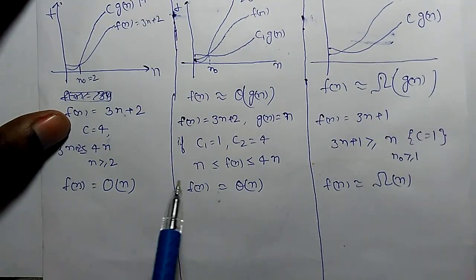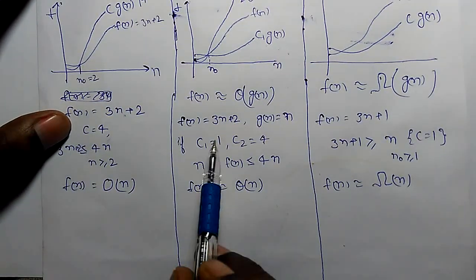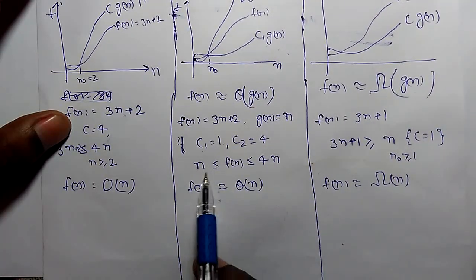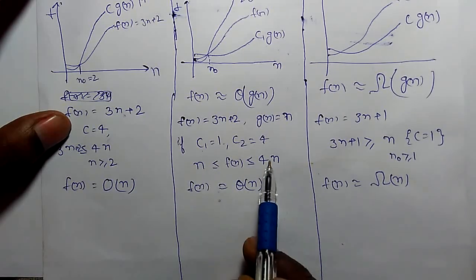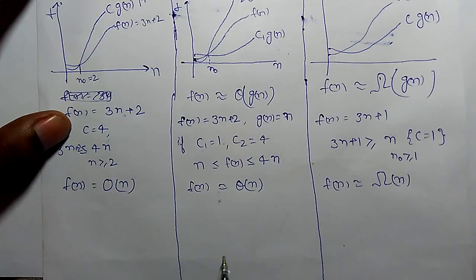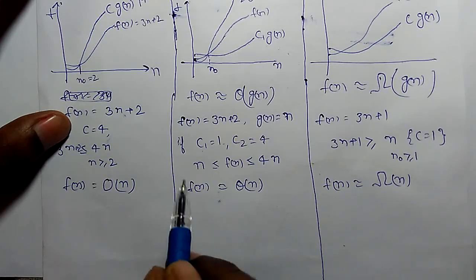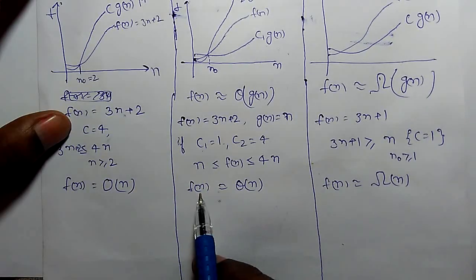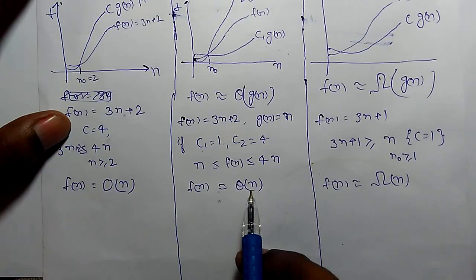For the same example 3N plus 2, we can see if we take C1 equals 1 and C2 equals 4, we will find it lies between N and 4N for N is greater than equal to 2. So Theta function would be F of N equals Theta of N.